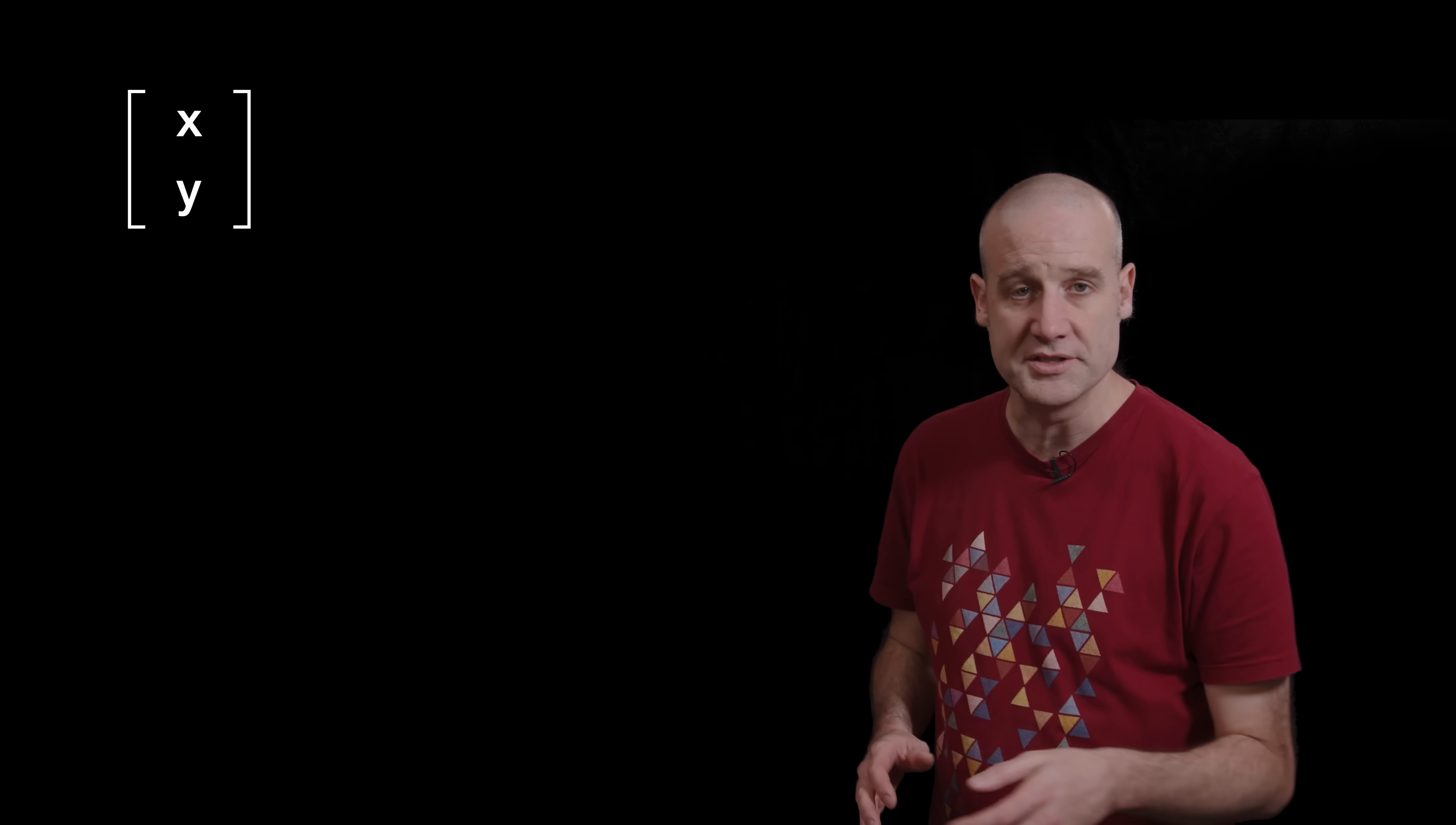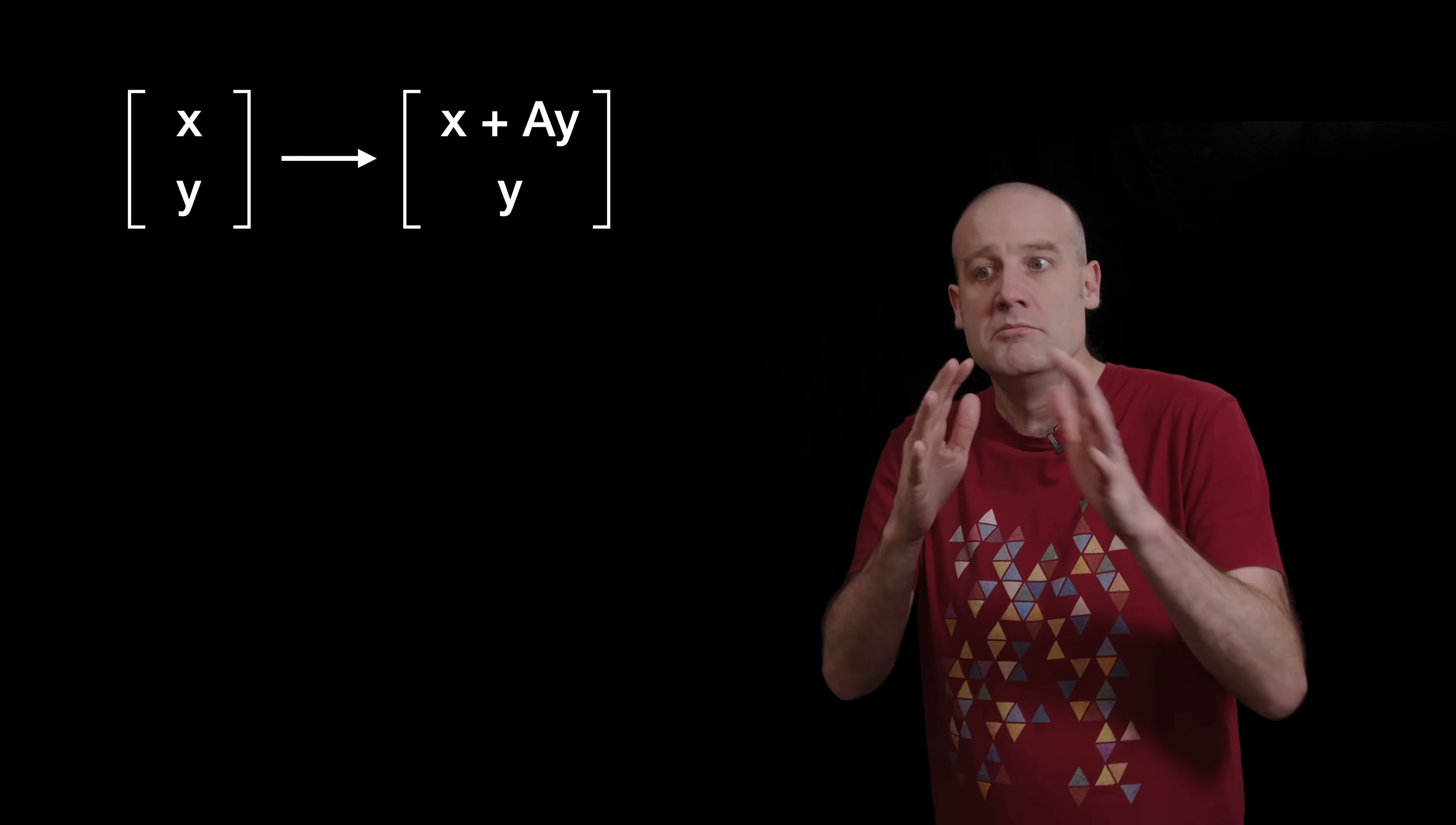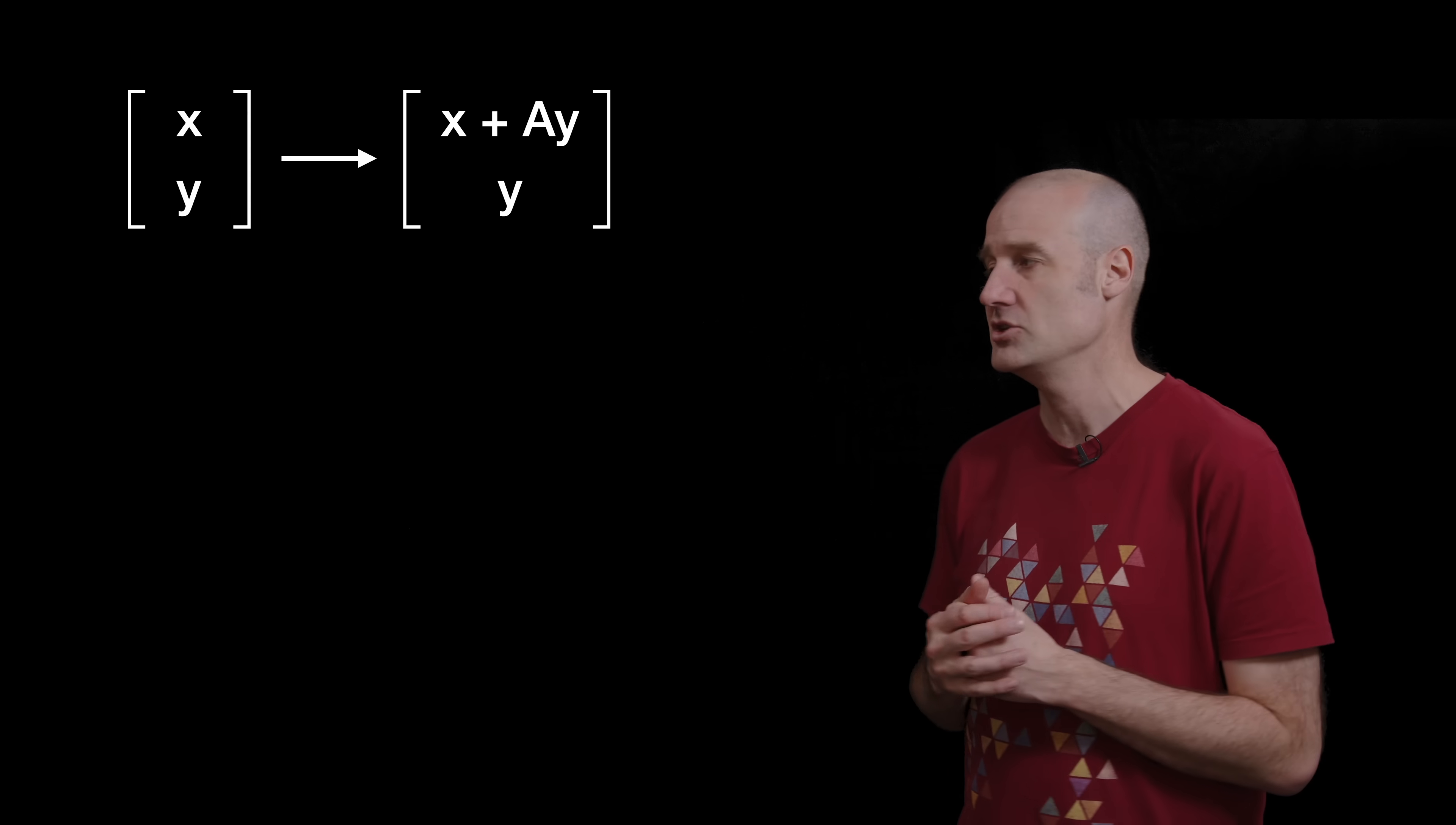Mathematically if we start with a vector that's our x and y coordinates of any given pixel, we're going to transform that so the y hasn't changed but the x now we add on some percentage, some ratio of the y coordinate which I'm just going to call A for the first transformation.